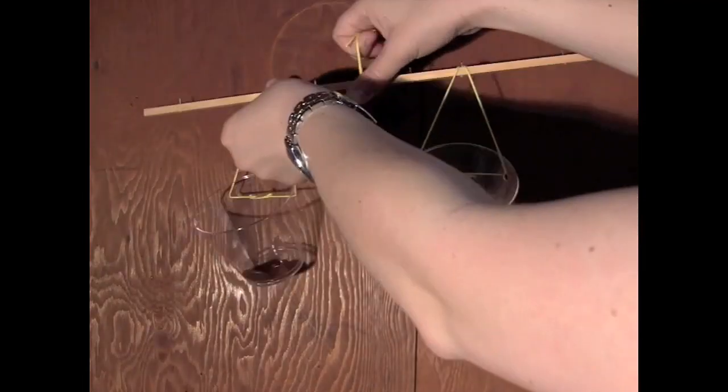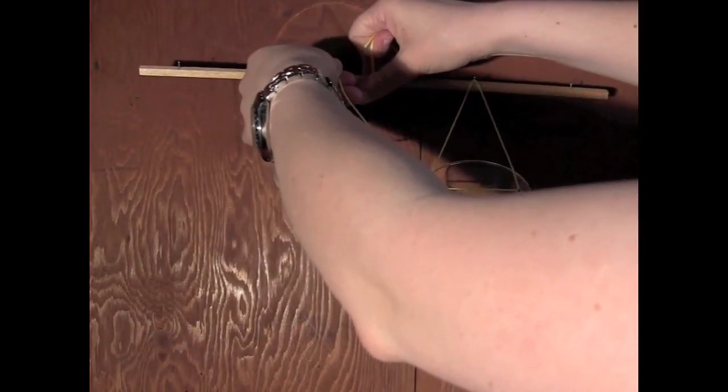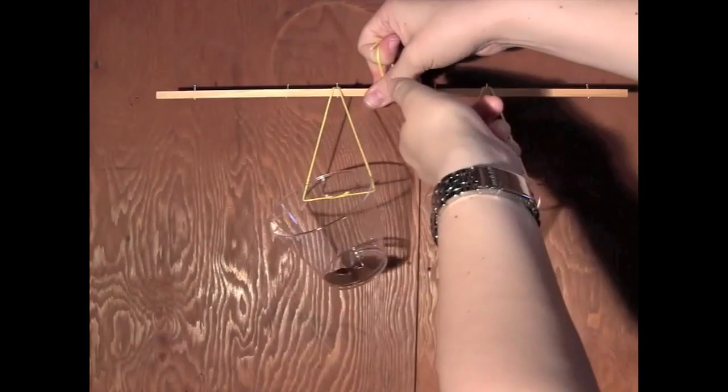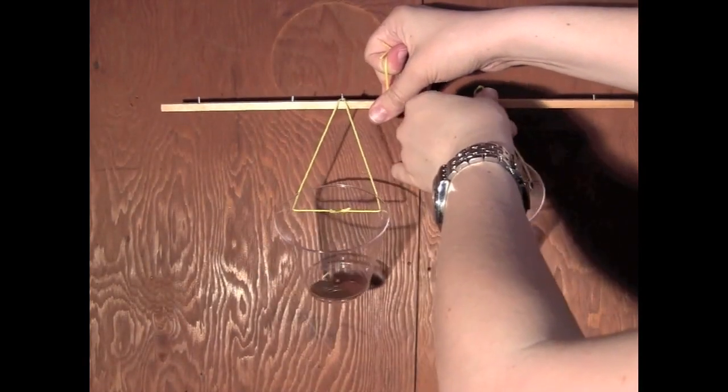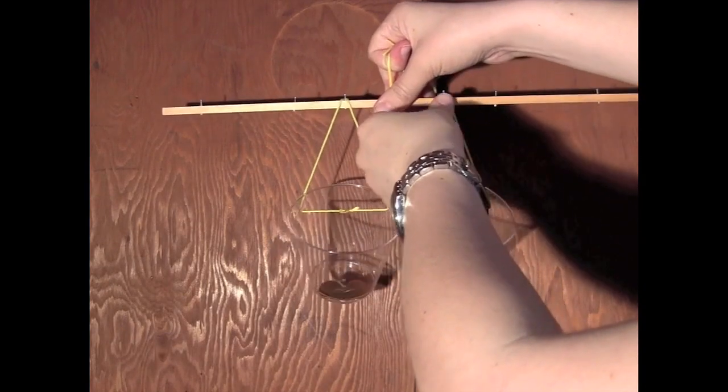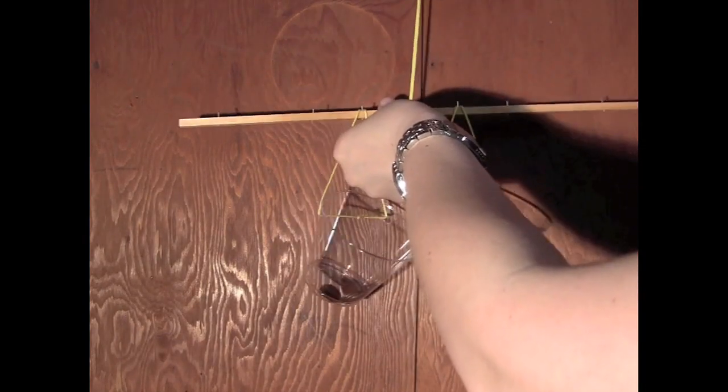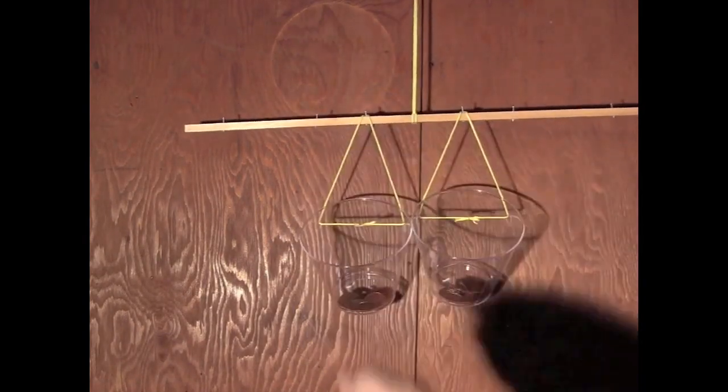What if I want to move this cup a different distance away from the middle and still keep it all balanced? One way of doing this is moving the other cup to the new distance as well. Sure enough, it balances again.